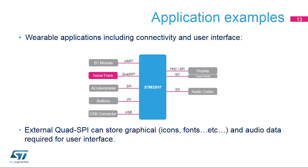Wearable applications require low-power management functions together with a high-quality user interface. This can be achieved using the STM32H7's Quad SPI interface to store in an external flash memory all the graphical content needed, including background images, high-resolution icons, or fonts to support multiple languages. Additional audio data for ringtones can also benefit from the large space offered by an external flash memory. The low pin count needed to drive such devices allows for a highly optimized system integration.